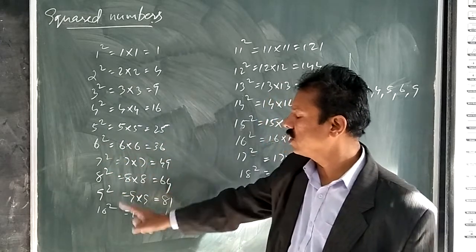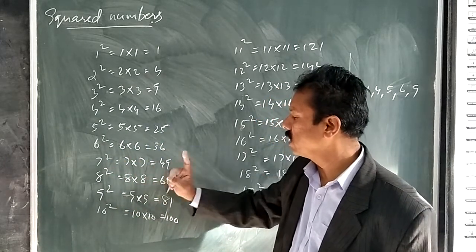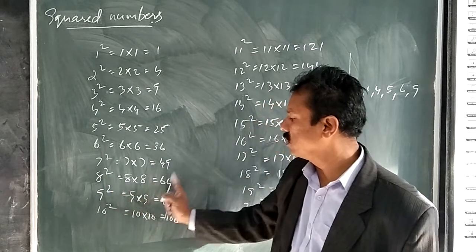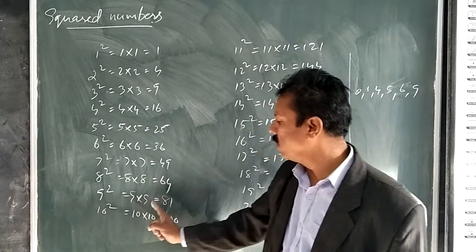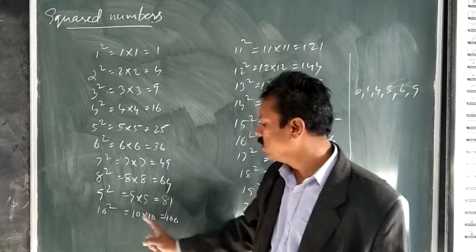6 square, 6 into 6 equals 36. 7 square, 7 into 7 equals 49. 8 square, 8 into 8 equals 64. 9 square, 9 into 9 equals 81. 10 square, 10 into 10 equals 100.